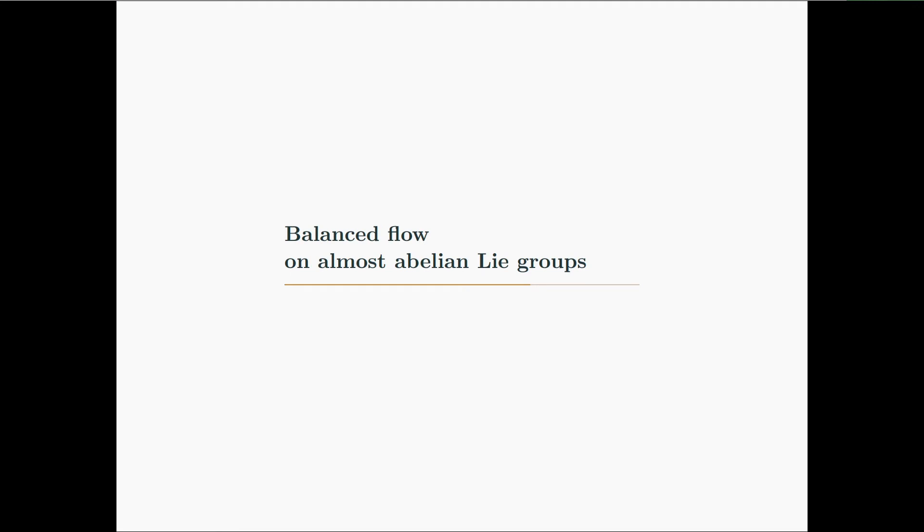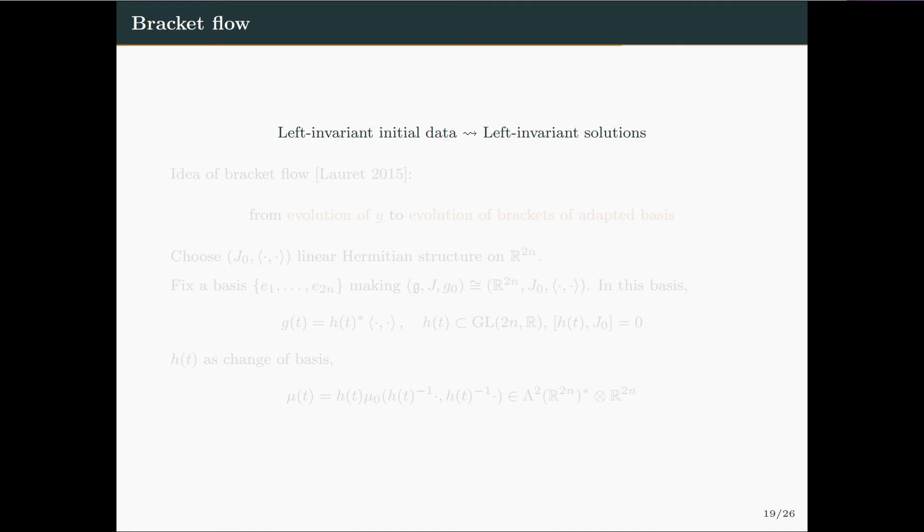So now I'll present the results we have obtained about the behavior of the balanced flow in the almost abelian setting. A general fact about this kind of geometric flow is that left-invariant initial data yield left-invariant solutions, which are unique in the class of left-invariant solutions. The idea behind the bracket flow of Lauret is the following. For simplicity, consider an evolution equation for a Riemannian metric. And the idea is not to focus on the evolution of the Riemannian metric, but on the evolution of the brackets of an adapted basis at each time.